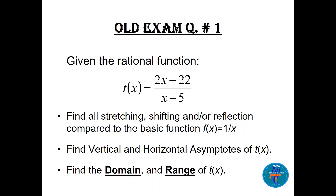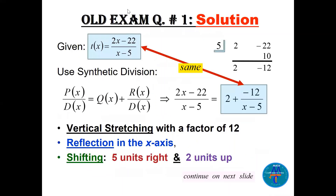Question number one: we have the rational function t(x) = (2x - 22) / (x - 5). Let's find everything: the stretching, the shifting, the domain and range, the vertical and horizontal asymptotes. The easy way is to use synthetic division: 2 and -22 divided by 5. Bring 2 down, 5 times 2 is 10, we get -12. So -12 is the remainder.